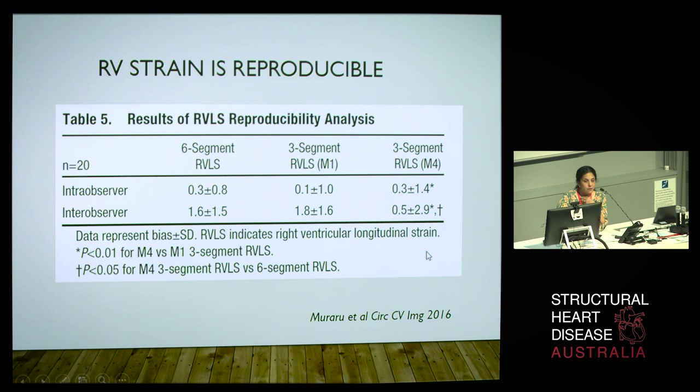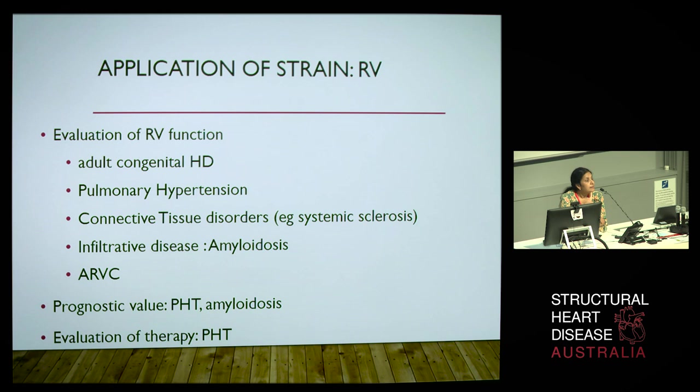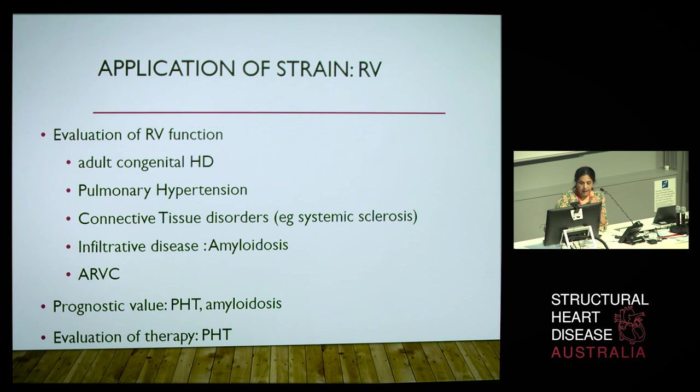Where can we apply these metrics? Evaluating the right ventricle is obvious in adult congenital heart disease, pulmonary hypertension, connective tissue disorders, infiltrative disease, and arrhythmogenic right ventricle. RV strain also has prognostic value, and emerging studies show it can be used in the therapeutic arena as well.